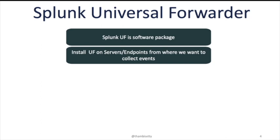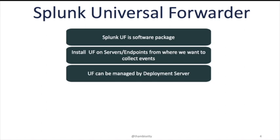Let's understand a few examples of Universal Forwarder usage. The first example is you have a file which is continuously getting updated with new events, and you want to collect events as soon as the file is updated. Another example is you want to monitor an NTP service to check whether the server is syncing with your company NTP server or not. You can write a script, add it to an application, and the application can be deployed to the Universal Forwarder installed on the server. UF can be managed by deployment server.